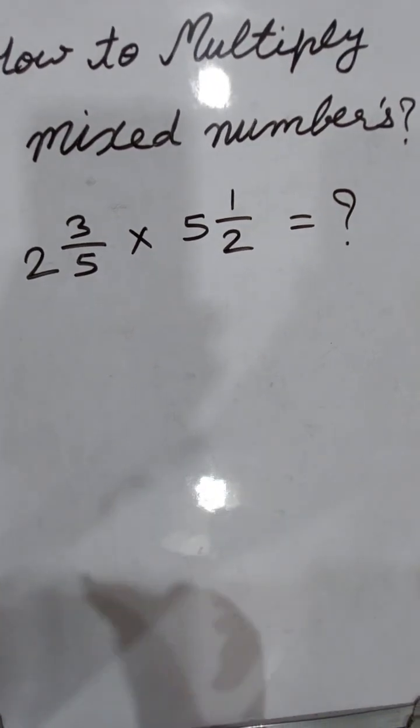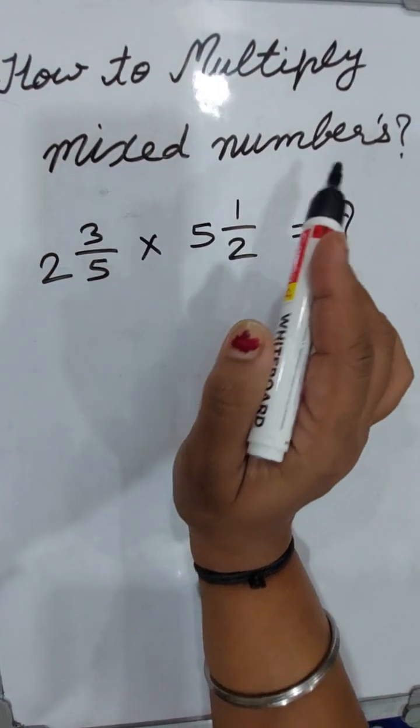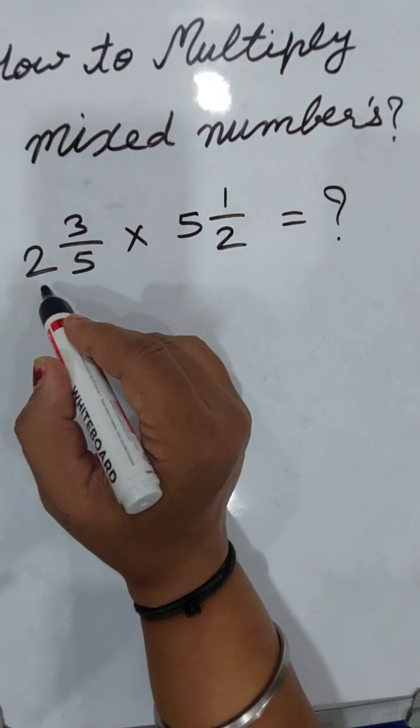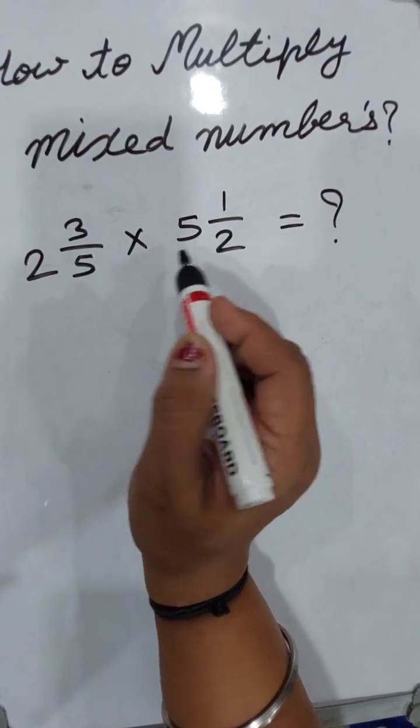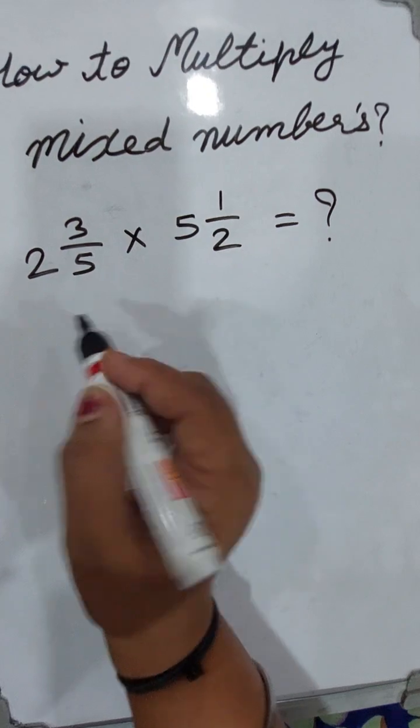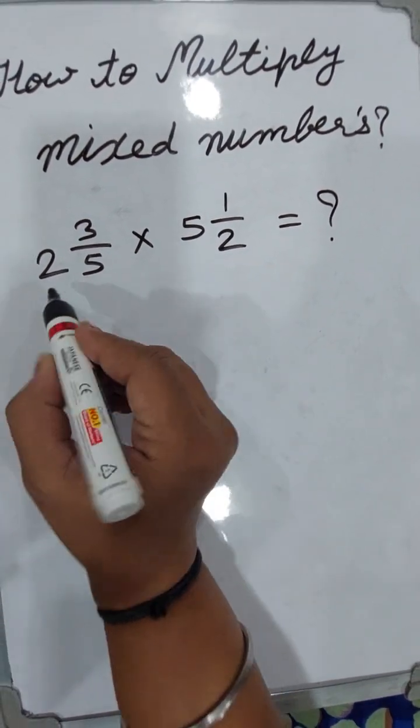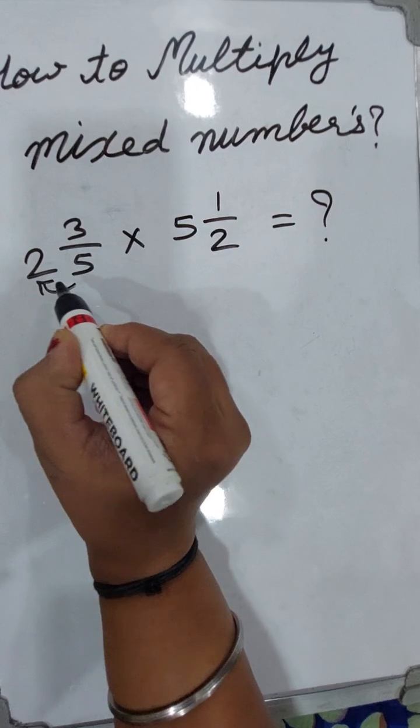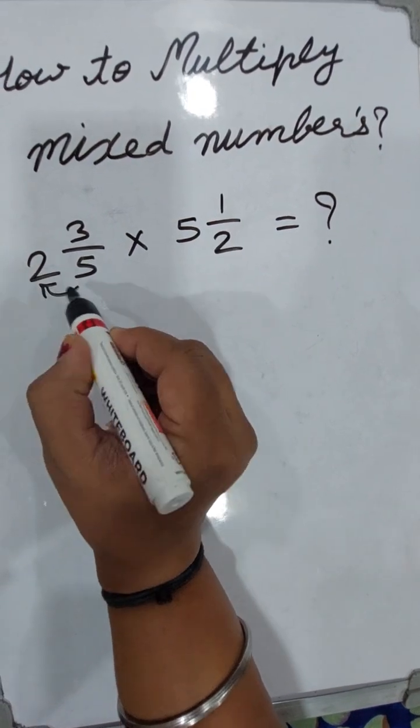Hello everyone, welcome to my YouTube channel. Today we'll solve how to multiply mixed numbers: 2 3/5 multiplied by 5 1/2. First, you need to convert these mixed numbers into improper fractions.